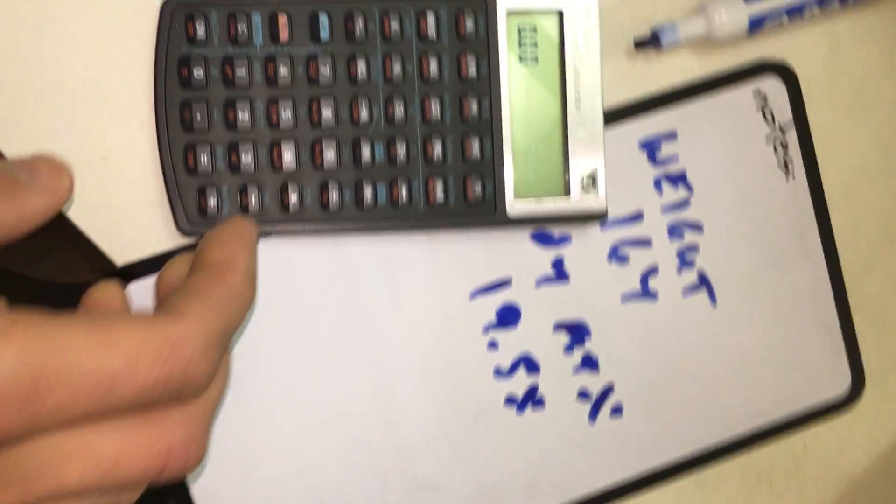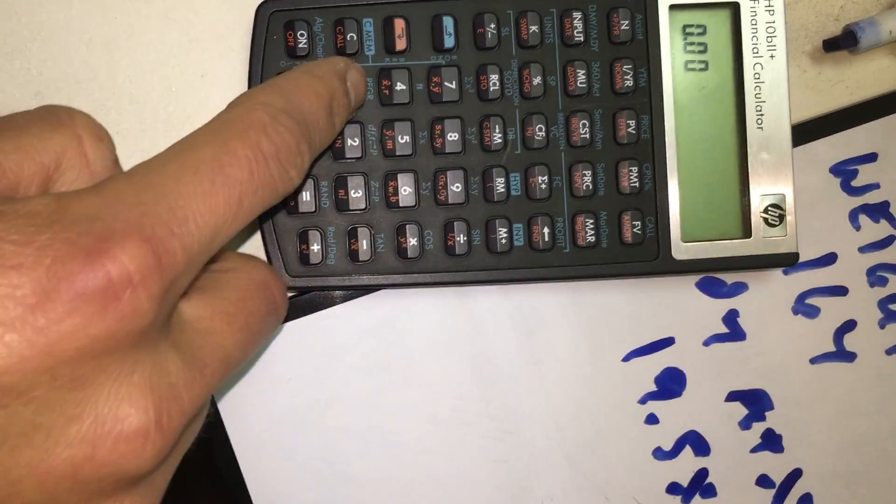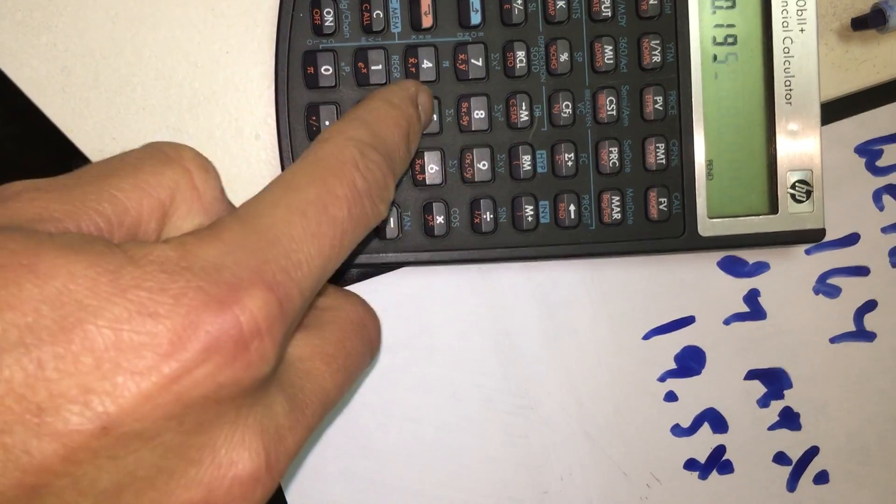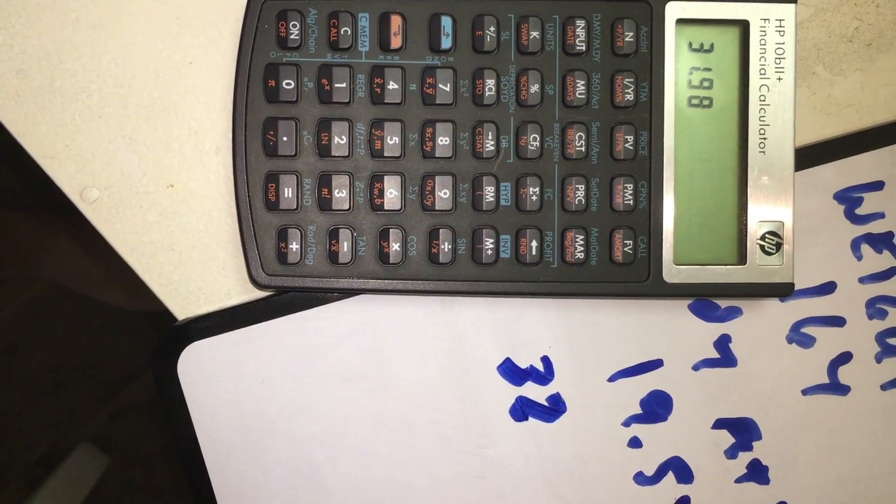So what you do is take your calculator, 164 times 19.5%. It's basically saying I've got 32 pounds of fat.